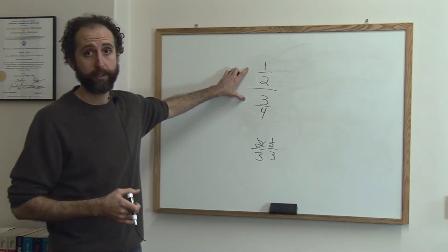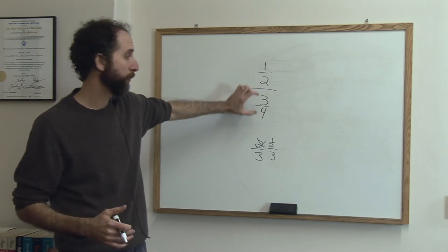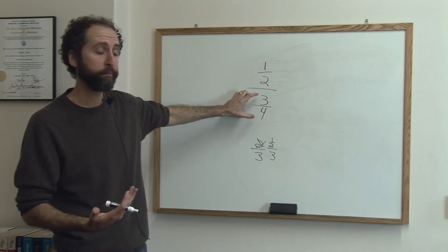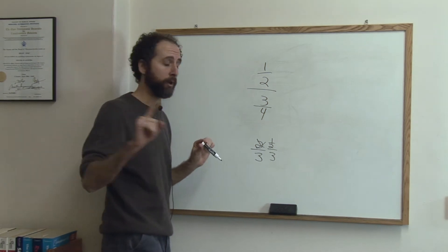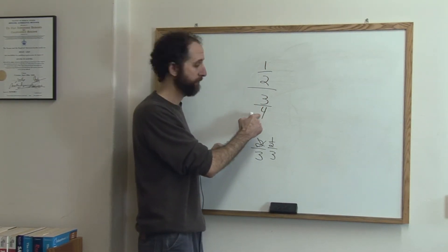So, if we want to simplify this complex fraction, nobody likes to have fractions in the numerator, the top, or the denominator, the bottom of a fraction. To simplify it out, all we do is very simple, all we do is we take the inverse, the reciprocal, that is, of this number.